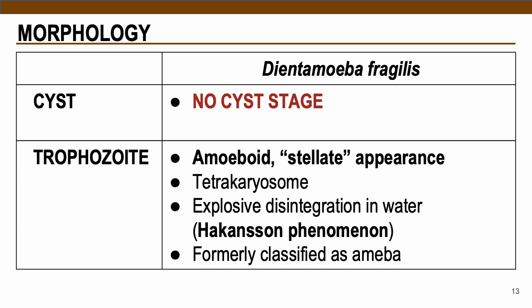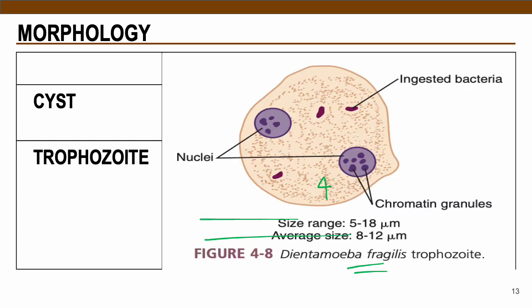For Dientamoeba fragilis, this has no cyst stage — only trophozoite. The trophozoite is amoeboid or stellate in appearance, which is why it was formerly classified as an amoeba. It has four karyosomes in total within a single nucleus. When exposed to water, it explodes or disintegrates, causing Hackinson's phenomenon. Here is a sample picture of the parasite, showing two nuclei with four or more karyosomes present.